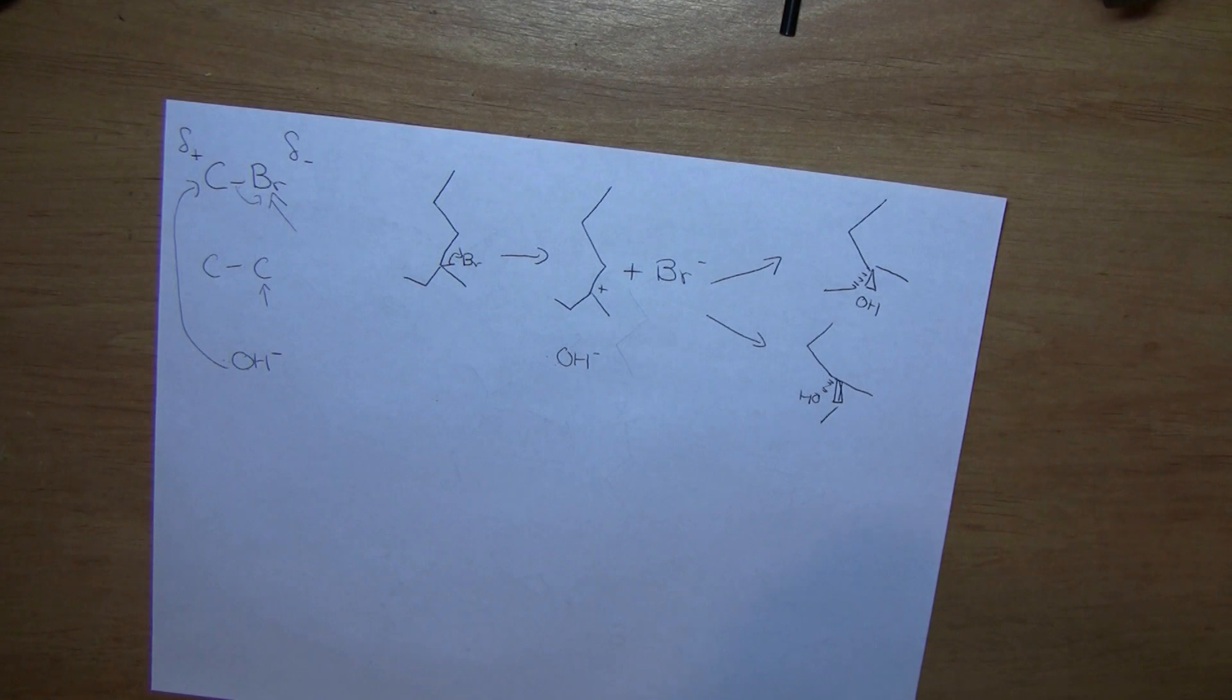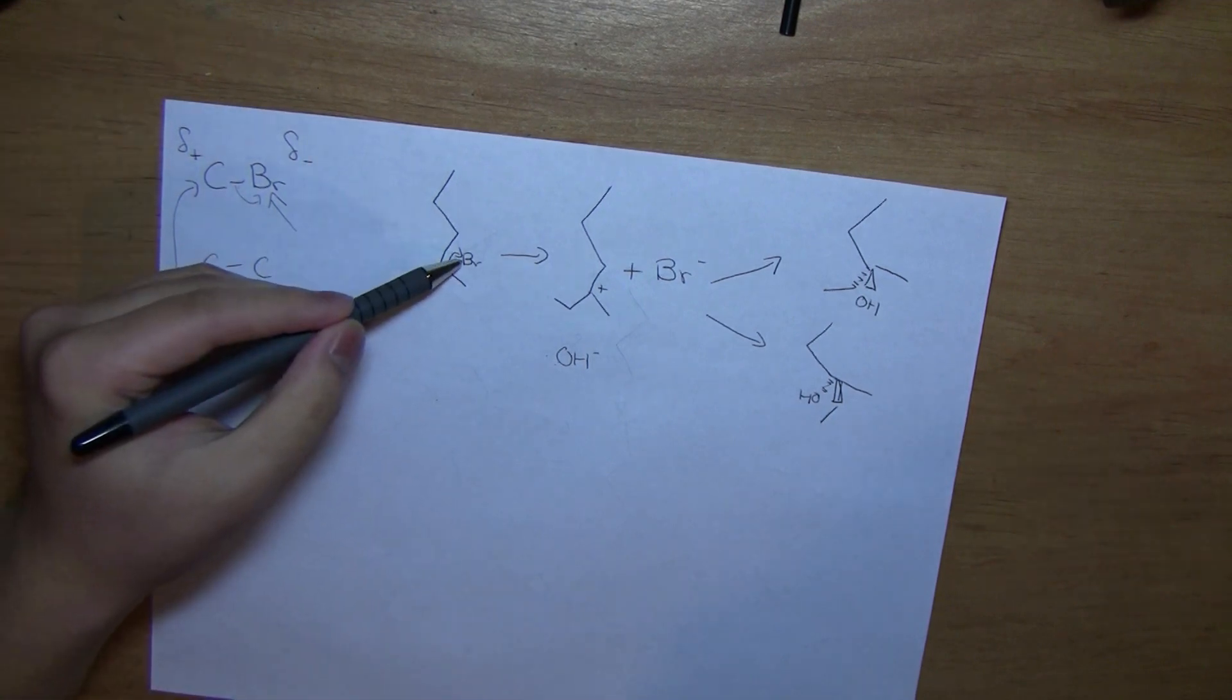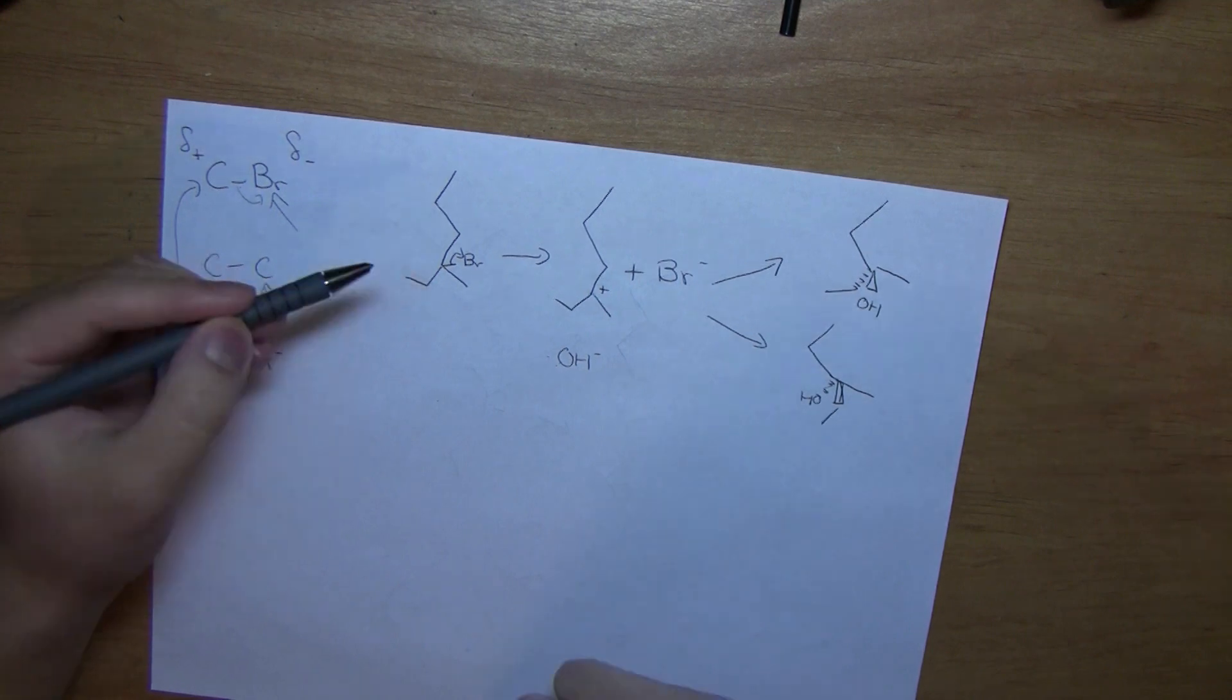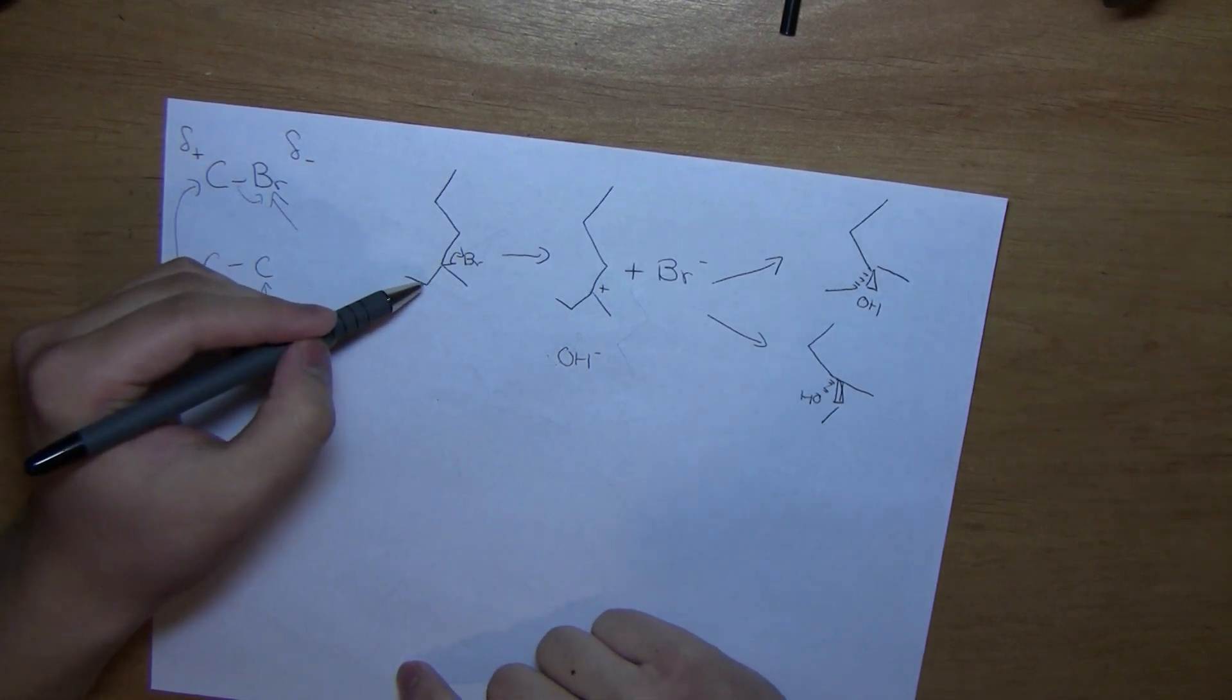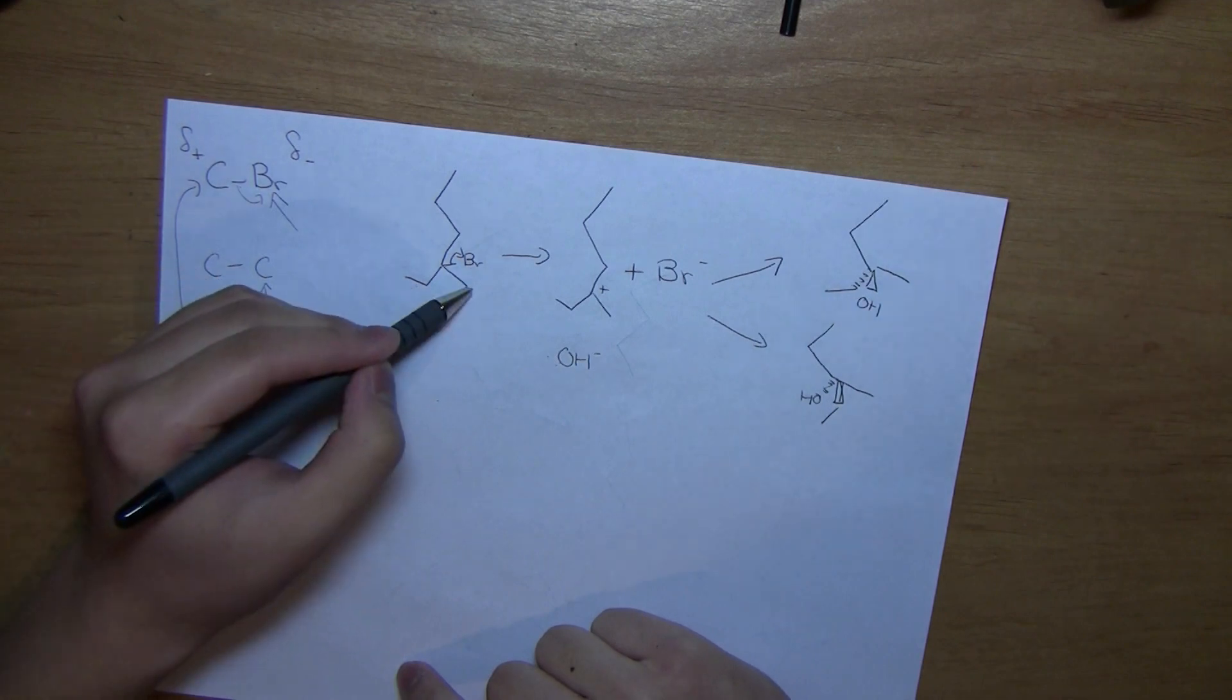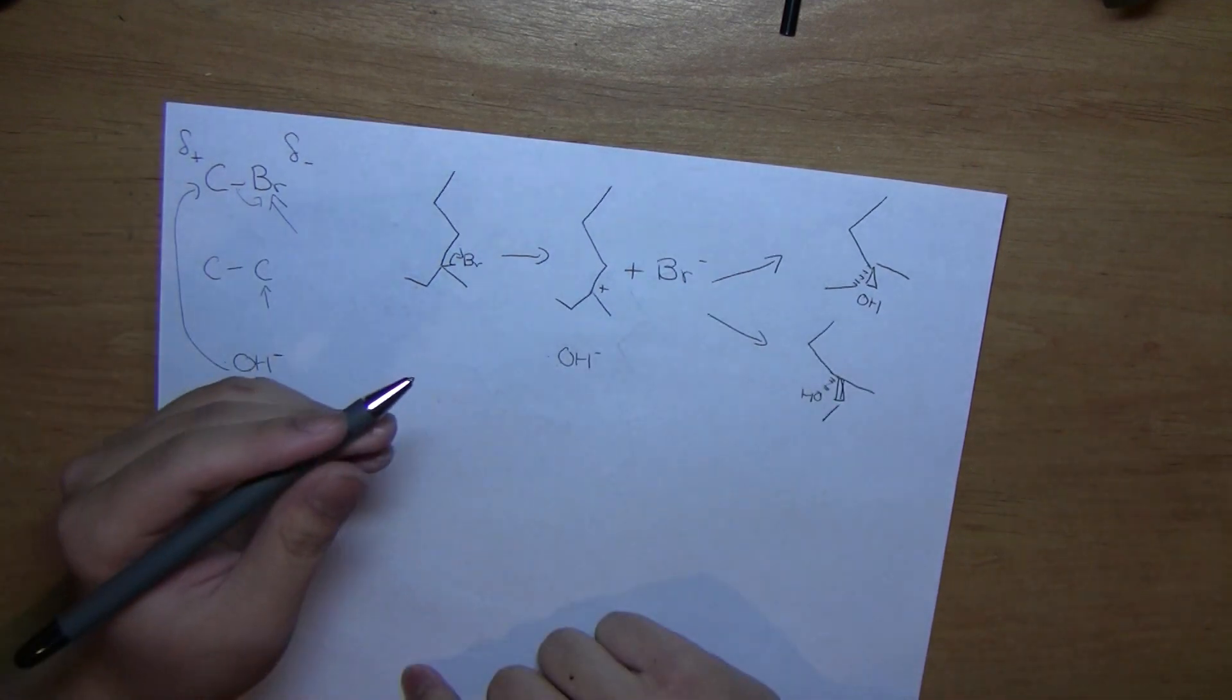Now, important thing to remember is that if you have the leaving group, the bromide, on a carbon which is a stereogenic center, meaning that this carbon is attached to three different lengths of a carbon chain. In this case, we have an ethyl group here, a methyl group here, and a propyl group here. It forms two enantiomers.